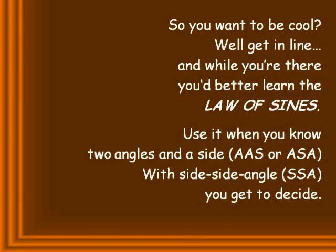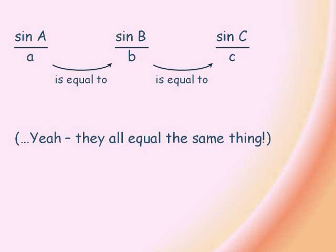So you wanna be cool? Well get in line. And while you're there, you'd better learn the law of sines. Use it when you know two angles and a side. With side-side-angle, you get to decide. Sine A over a is equal to sine B over b, is equal to sine C over c.